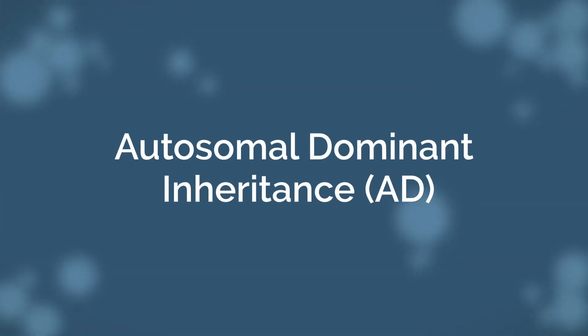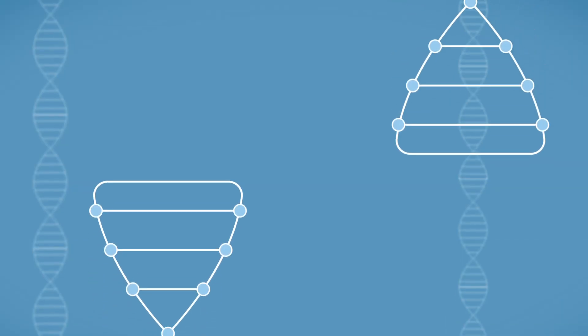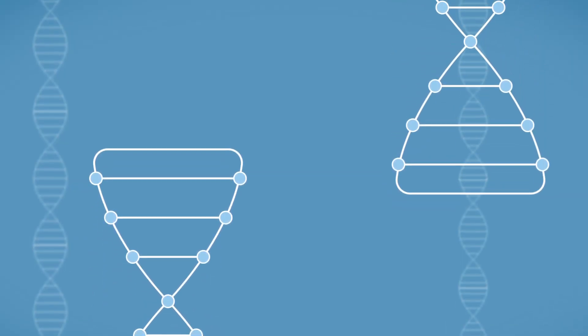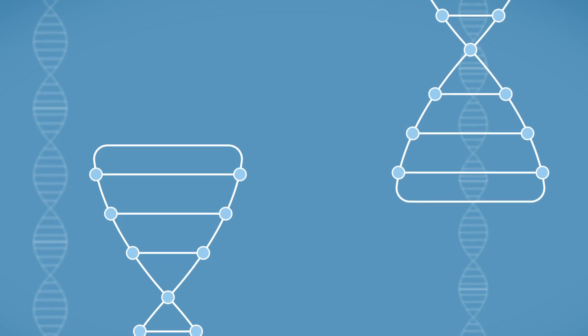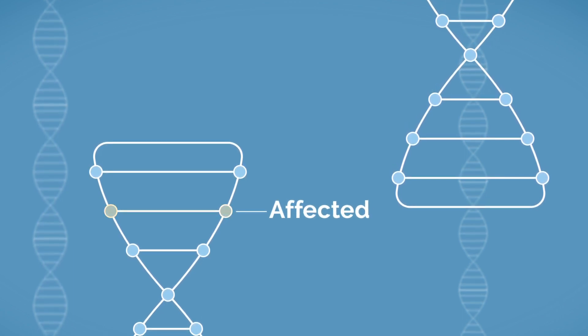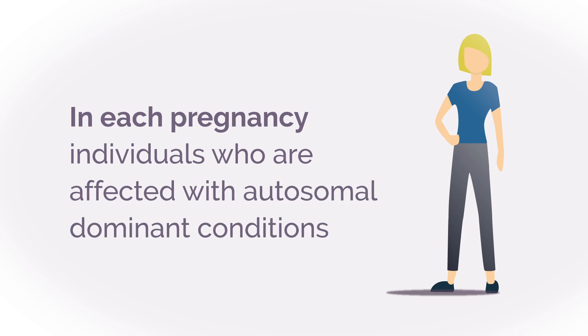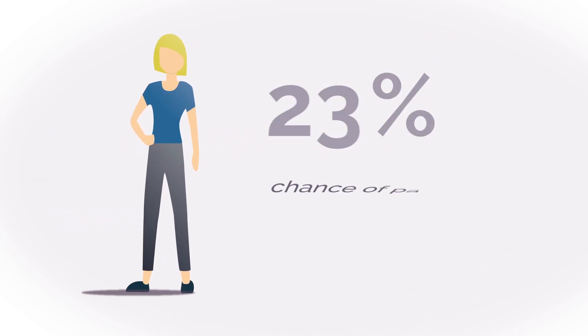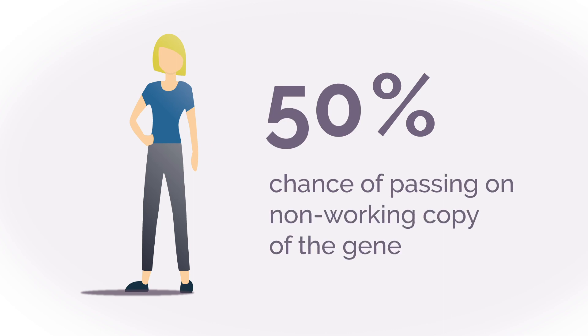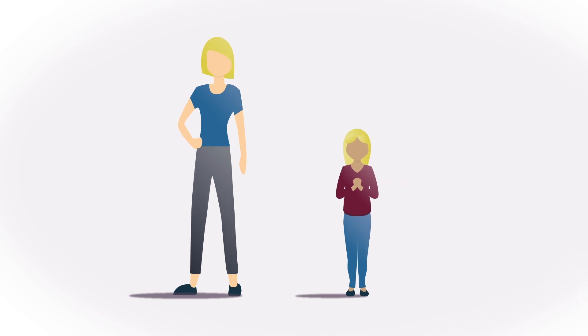Autosomal dominant inheritance. A person with an autosomal dominant condition has only one non-working copy of a gene and therefore is considered to be affected. In each pregnancy, individuals who are affected with autosomal dominant conditions have a 50% or 1 in 2 chance to pass on their non-working copy of the gene and have an affected child.